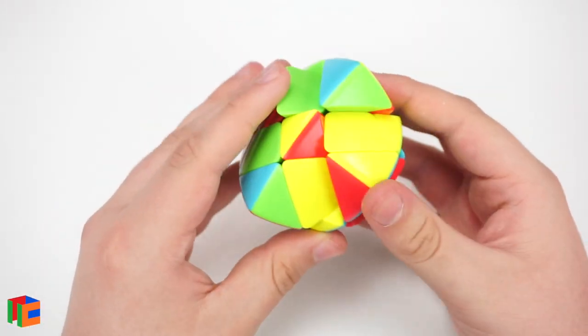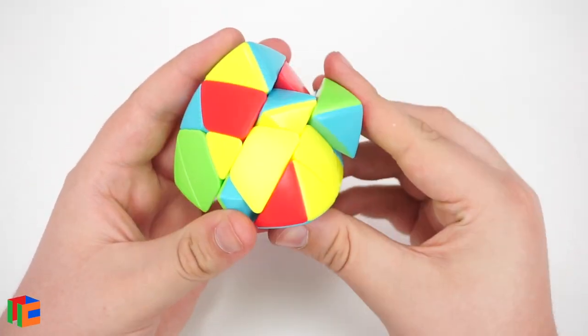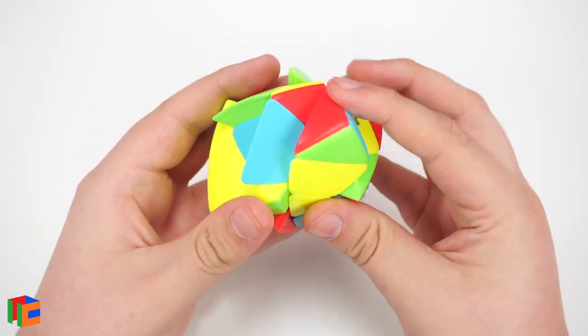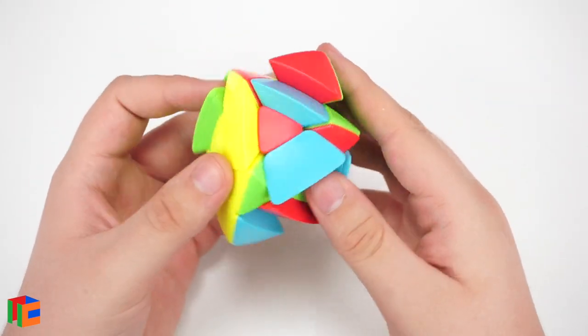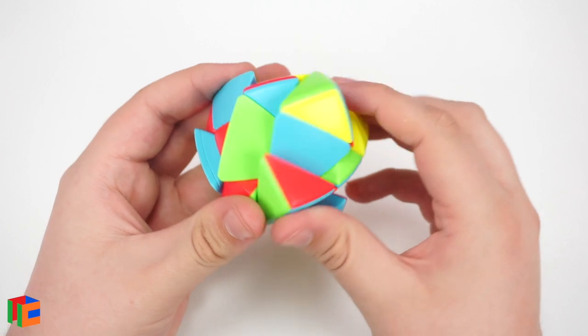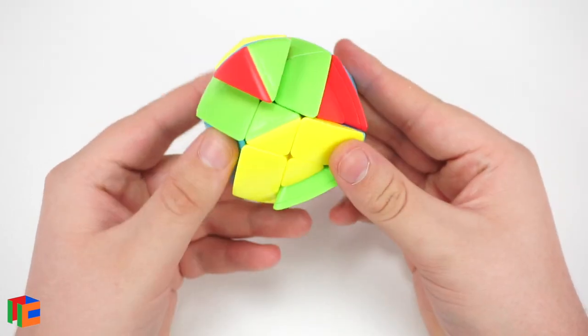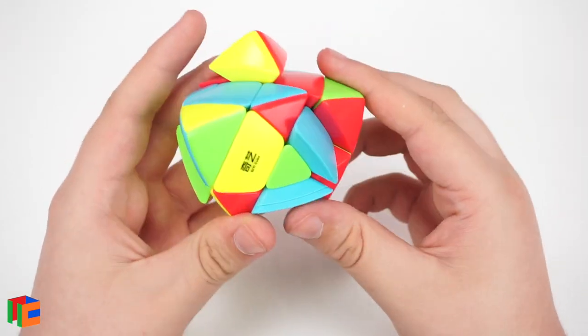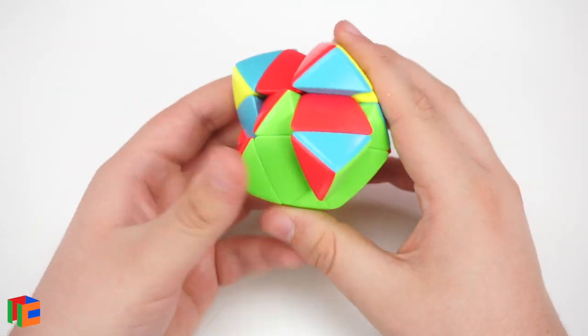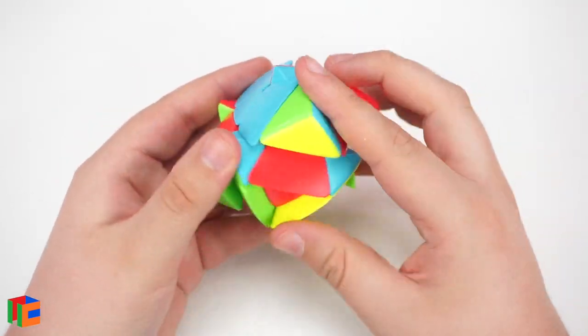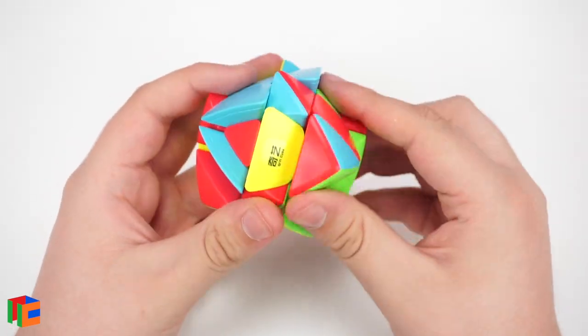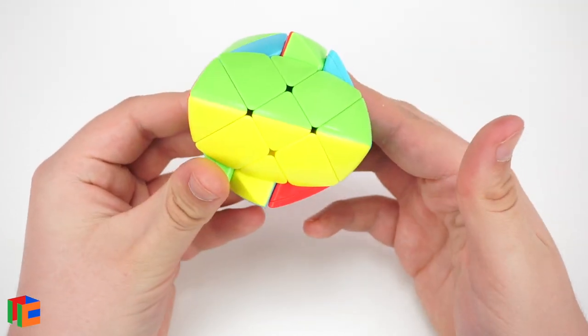And we'll insert some cross pieces. You want to make sure that the centers all line up here. So then insert that one. We'll need a green piece here. That goes there. I don't think I scrambled this too well, actually. It seems like all these pieces are falling into place quite easily. So then we'll put in the corners. We just need one more over here. There we go. So now we have our face.